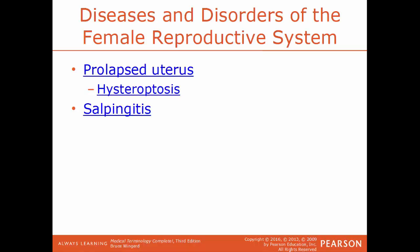A prolapsed uterus is a condition where the muscles and ligaments of the pelvic floor have become stretched out and weakened, causing the uterus to slip down and protrude out of the vagina. Another term for this is hysteroptosis — a drooping or sagging of the uterus. Salpingitis is an inflammation of the fallopian tube. An illustration shows how the uterus would normally be anchored higher up but sags down into the vagina, and in severe cases it becomes very visible externally.